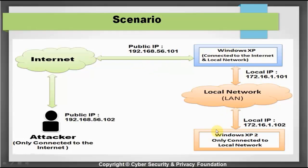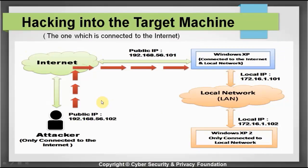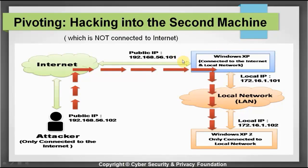There is a Windows XP 2 computer which is only connected to the local network, and the first Windows XP is connected through LAN to this computer. The attacker cannot directly access this second computer, but his end objective is to get some information from it. So he is going to use the internet to hack the first Windows XP, and once that is done, he is going to pivot from that computer, go through the LAN, and control the internal machine.